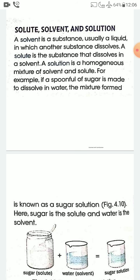A solution is a homogeneous mixture of solvent and solute. For example, if a spoonful of sugar is dissolved in water, the mixture formed is known as sugar solution. In this sugar solution, sugar is the solute and water is the solvent.